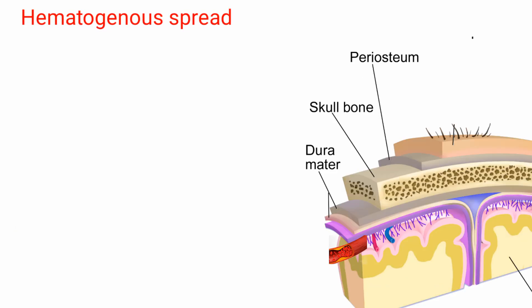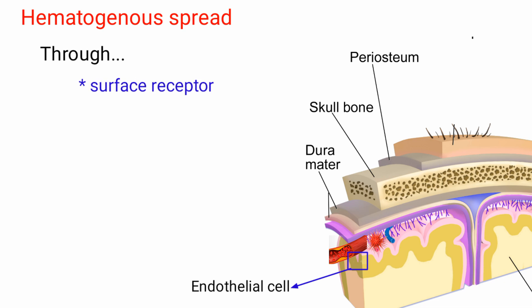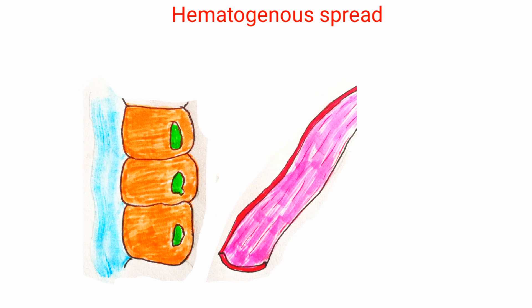The second route is hematogenous spread, which is when a pathogen enters the bloodstream and moves through the endothelial cells in the blood vessels making up the blood-brain barrier and gets into the cerebrospinal fluid. To do this, the pathogen typically has to bind surface receptors on the endothelial cells in order to get across. Once the pathogen finds its way into the cerebrospinal fluid, it can start multiplying.